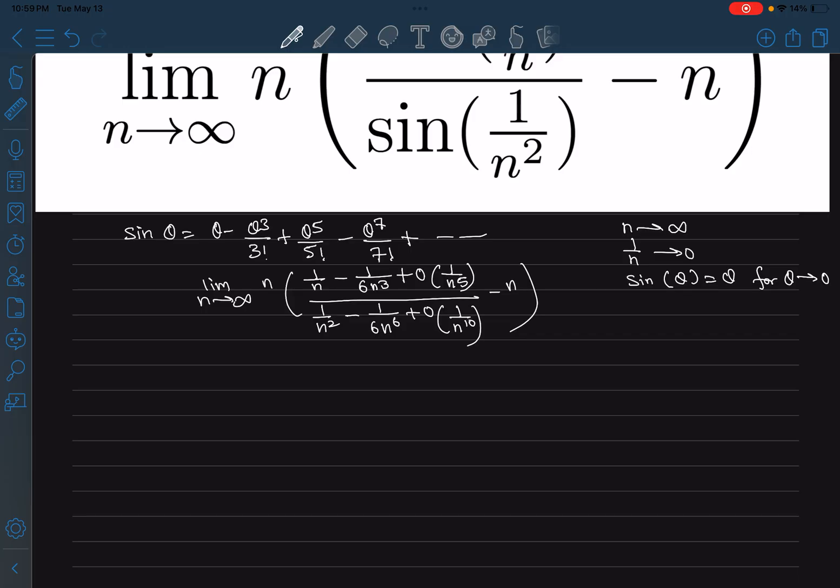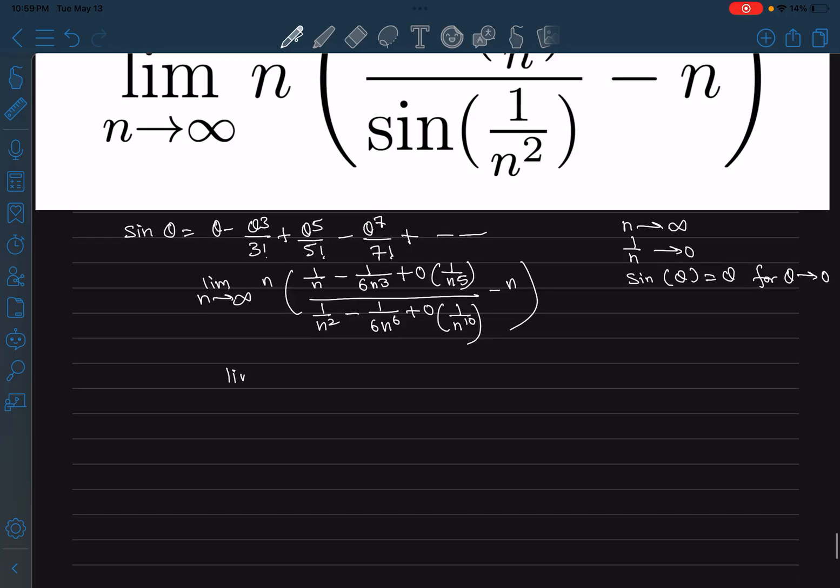Now if I multiply by n and then also take the LCM, what I will get is, this will be 1 minus 6 n square plus order of 1 by n to the power 4, and then this is n times n to the power n square.